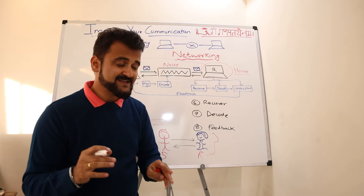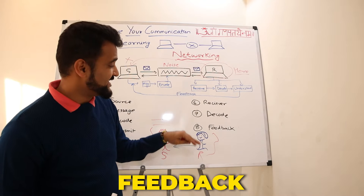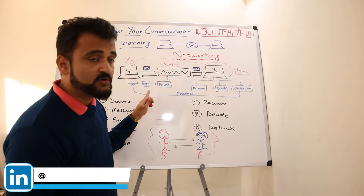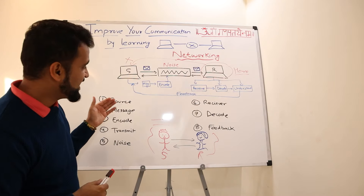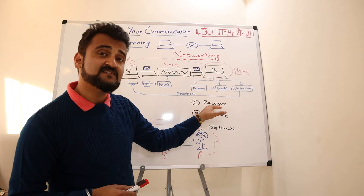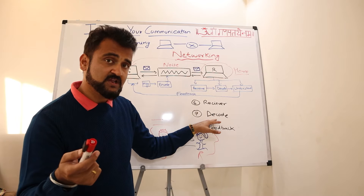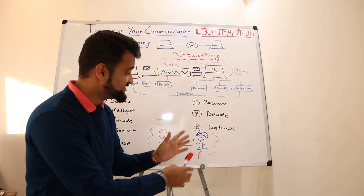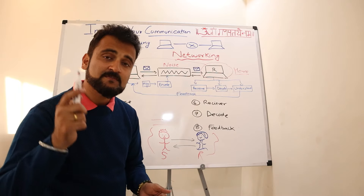Once the receiver has understood the message, they send the feedback — letting you know they understand what you wanted to convey. That's your feedback loop and that's the eighth step. So with these eight steps every communication happens in networking, and exactly these eight steps can be used by you for having good communication: starting with the source and message, the encoding, transmission, suppressing the noise, treating the receiver as your hero, decoding it properly, and sending feedback. If all the boxes are ticked, you are having and improving your communication.